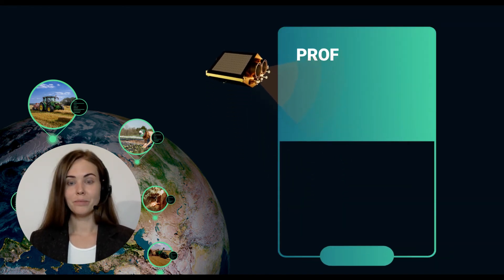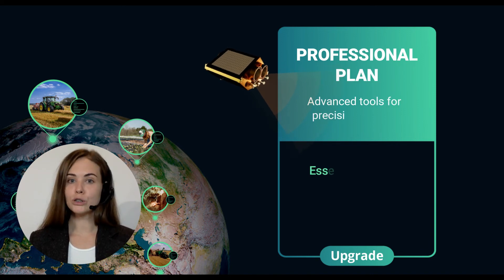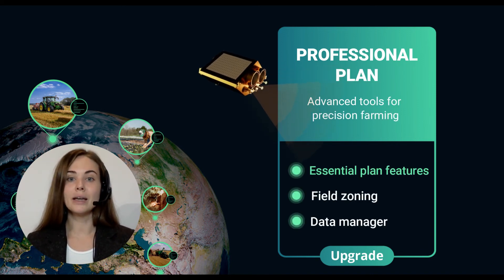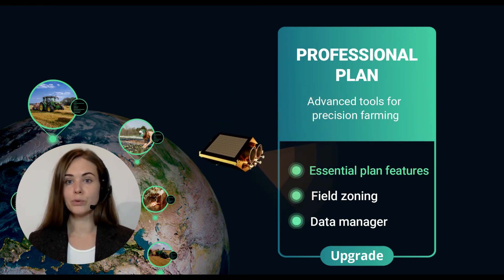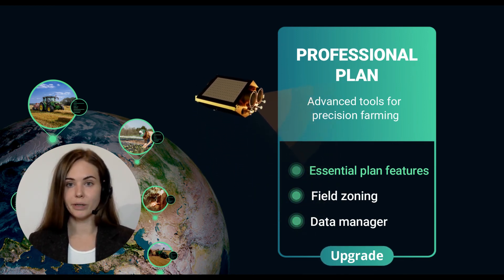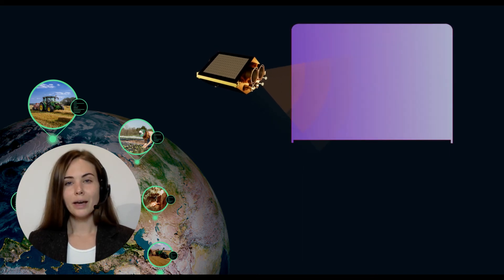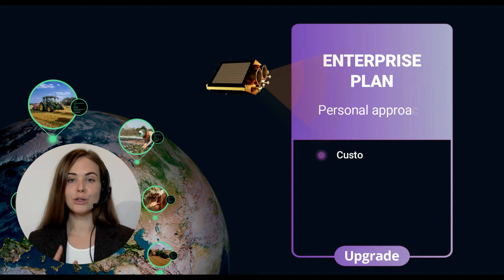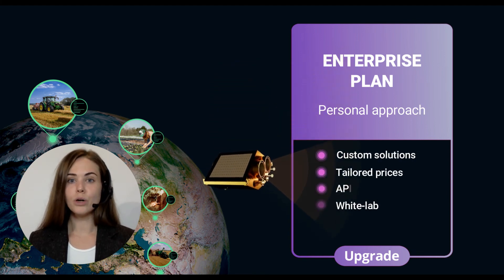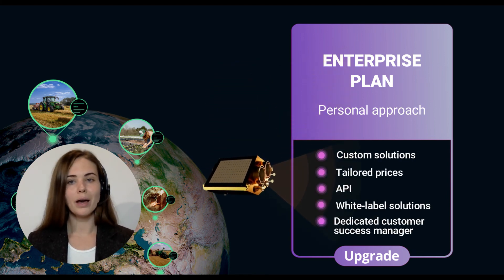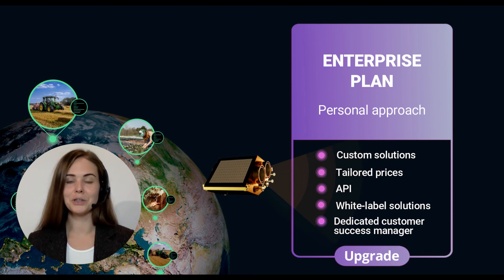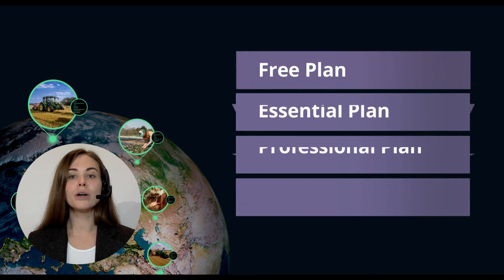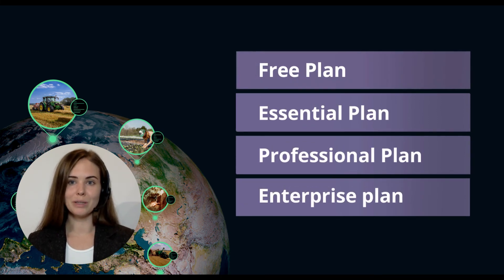The professional plan includes all the perks of the essential plan, plus field zoning on top — the advanced tool for precision farming that will help you cut costs and increase productivity. In case you need something more than that, we also offer a special enterprise plan. Just tell us more about your challenges and goals and we'll show you all the potential of our research and development teams. We will work out the most efficient strategy to boost your business.